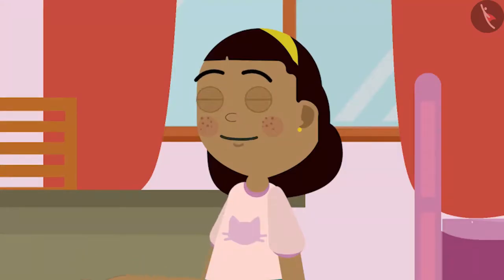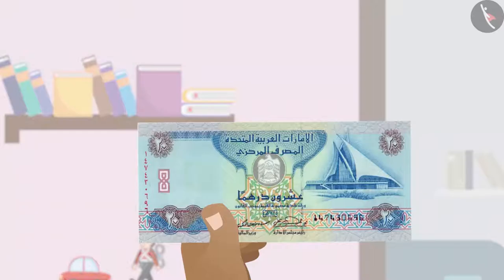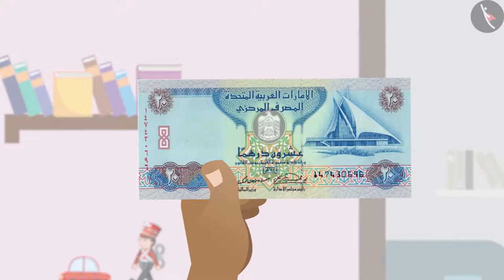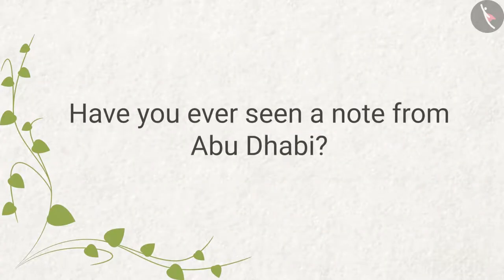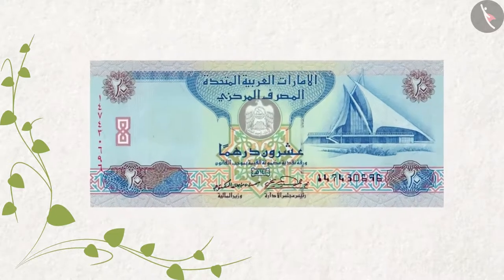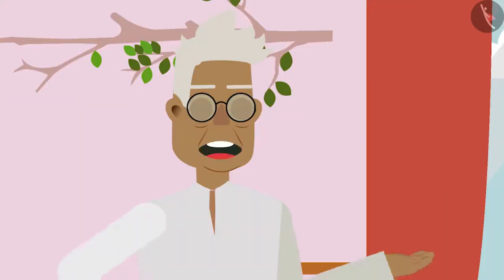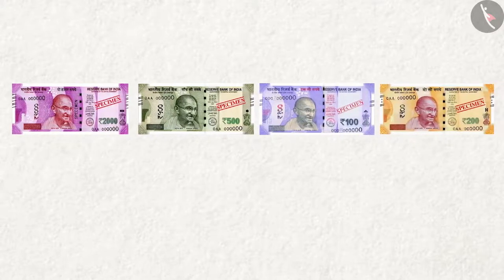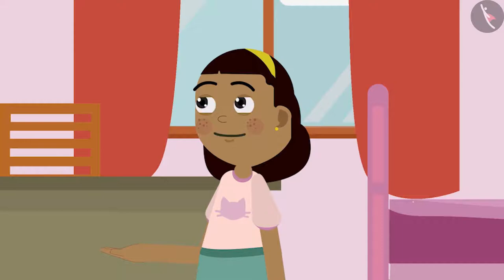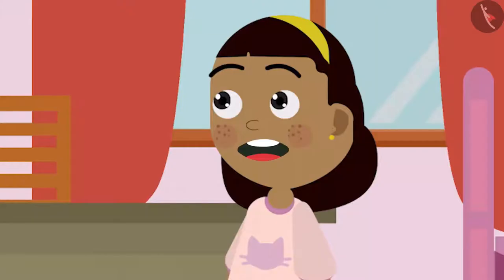Grandpa, I am looking at the note from Abu Dhabi given by dad. Oh well, let me look at it too. In which language is it written, grandpa? Have you ever seen a note from Abu Dhabi? This is Arabic, Zia, and this note is of one dirham. Dirham is the currency of the UAE, just like we have rupees here. Oh, I forgot to ask dad about it. It is okay, your grandpa is very wise! Yes, of course, grandpa.